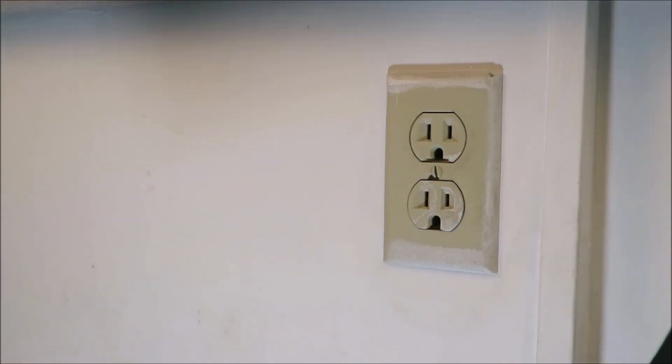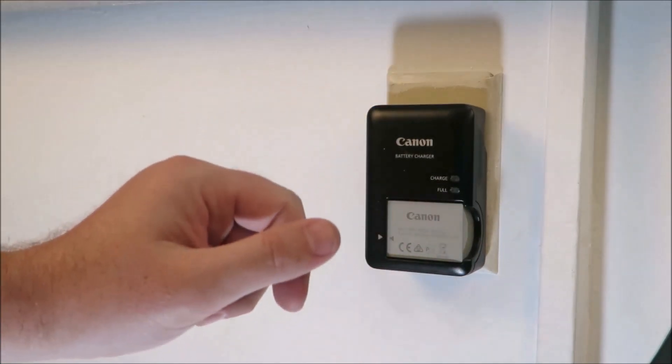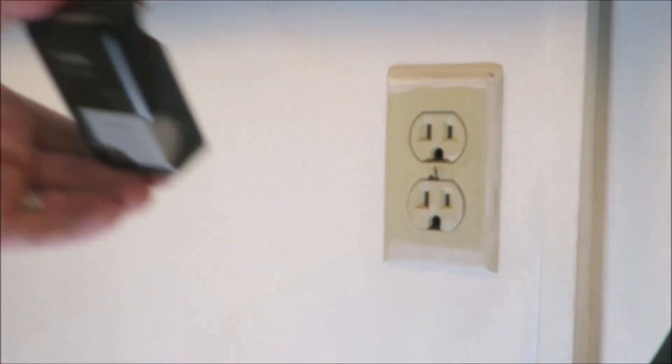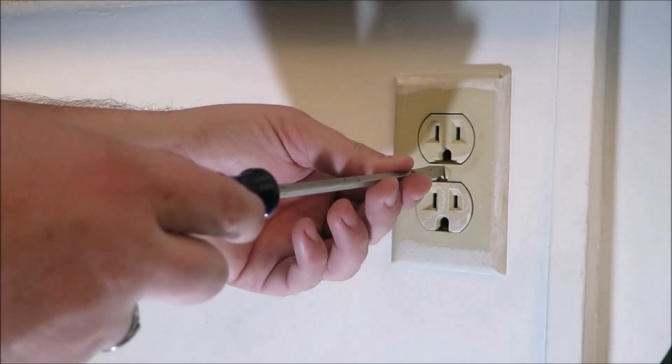Now that we've turned off the power, let's plug something in just to double check. Good, no indicator light, so we have no electricity flowing. Now that we know it's safe, we can go ahead and take off this plate. So we're gonna take a screwdriver and unscrew it.